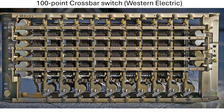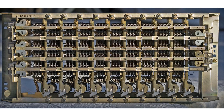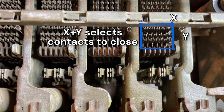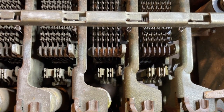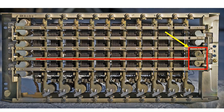This Western Electric model weighs about 30 pounds and is made mostly of steel. It's about 21 inches (53 centimeters) long and 9 inches (23 centimeters) tall. Here are 10 vertical holding electromagnets at the bottom and 10 connected vertical rods. There are 10 horizontal selector magnets, six on the left and four on the right.